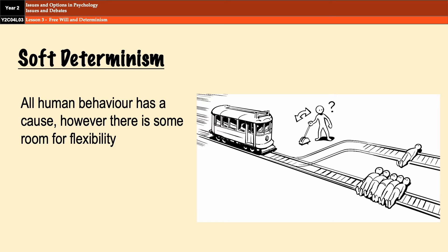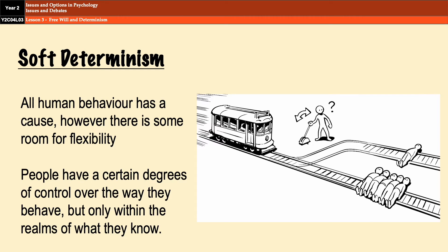Soft determinism, on the other hand, was proposed by James in 1890 as a less extreme stance than hard determinism. It suggests that all human behavior has a cause; however, there is some room for flexibility, and people have a certain amount of conscious control over the way they behave, but only within the realms of what they know. People are given a snifter of free will, but not much. Like in the picture, the guy has the free will to decide where the carriage is going to go, but doesn't have the free will to stop the train. In psychology, approaches that have a cognitive element tend to advocate soft determinism — things like social learning theory, where we learn through observation, but then have the choice as to whether we actually want to carry out that behavior.